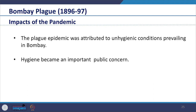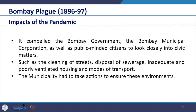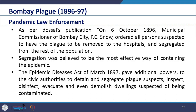The plague epidemic was attributed to unhygienic conditions prevailing in Bombay, making hygiene an important public concern. It compelled the Bombay government, the Bombay Municipal Corporation and public-minded citizens to look closely into civic matters such as cleaning of streets, disposal of sewerage, inadequate and poorly ventilated housing and modes of transport. On 6th October 1896, Municipal Commissioner of Bombay City P.C. Snow ordered all persons suspected to have the plague to be removed to hospitals and segregated from the rest of the population. Segregation was believed to be the most effective way of containing the epidemic.